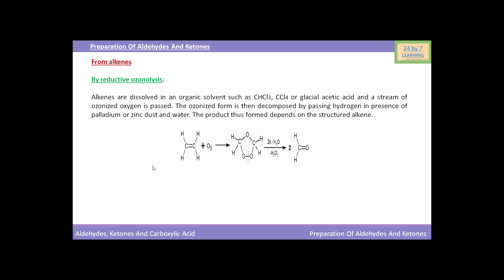You can see the reaction. This is ethene. When it reacts with ozone, it will form an ozonide intermediate compound which is then decomposed by passing hydrogen in the presence of zinc dust and water. After releasing hydrogen peroxide, it will form HCHO, that is formaldehyde, an aldehyde.